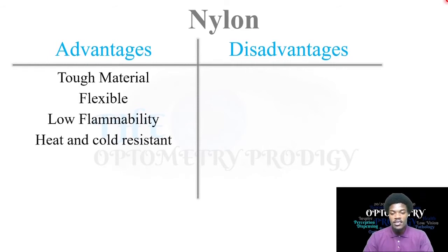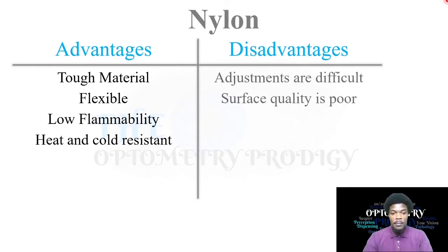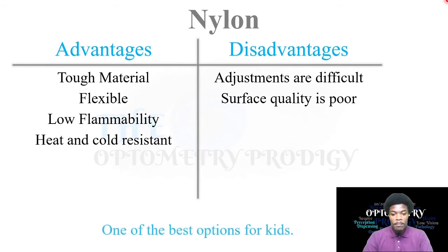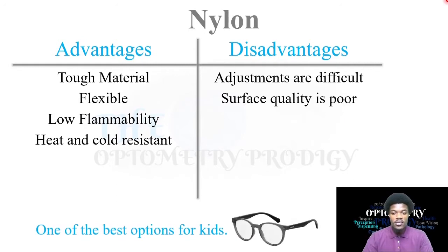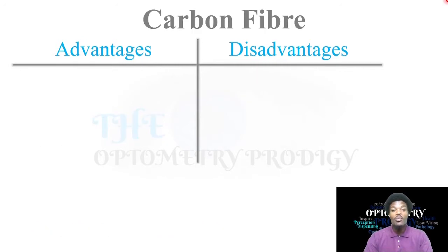Nylon — the advantages are that it is a tough material, flexible, low flammability, and heat and cold resistant. The disadvantages are that adjustments are difficult to make and the surface quality is poor. However, it is one of the best options for kids because of its toughness and flexibility. It is also one of the cheaper options, making it a great choice for children.